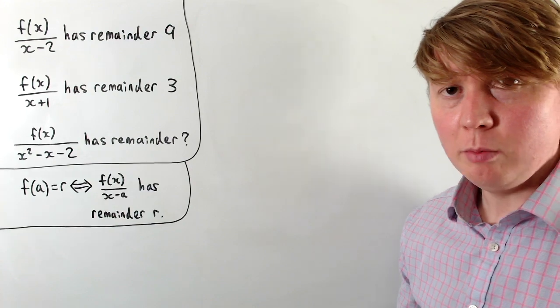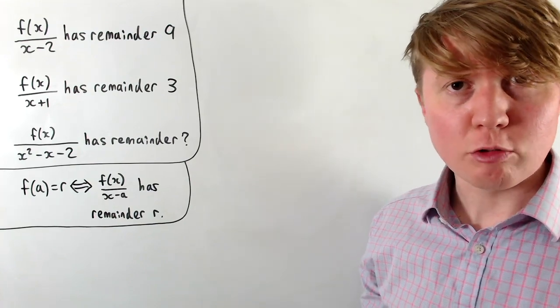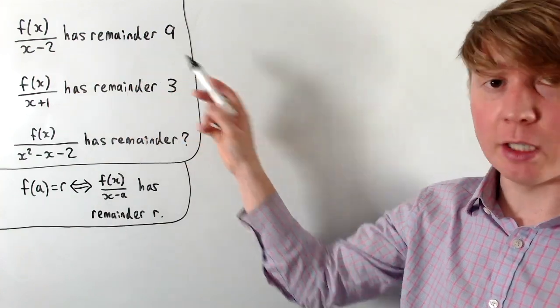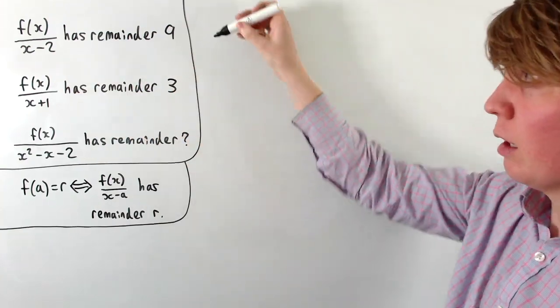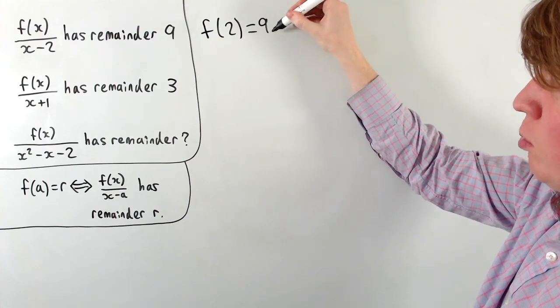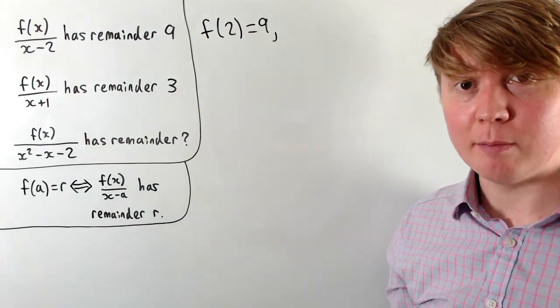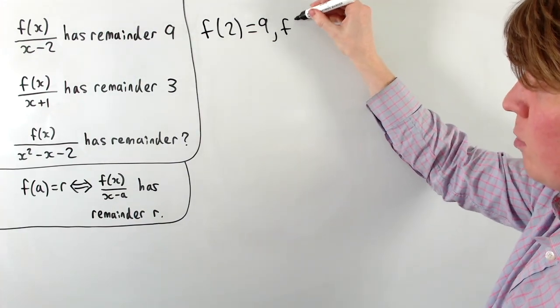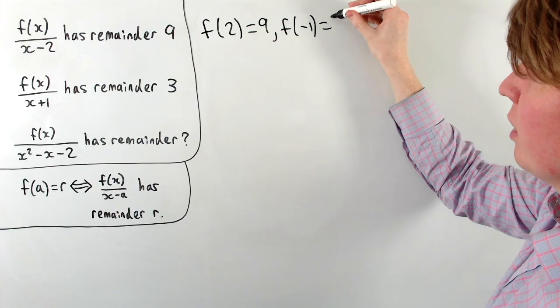Now back to our problem. We can use the remainder theorem to extract some more information. We know that when we divide by x minus 2, we've got a remainder of 9, and the remainder theorem tells us that f(2) must be equal to 9. Similarly here, when we divide by x plus 1, we get a remainder of 3, so the remainder theorem tells us that f(-1) is 3.